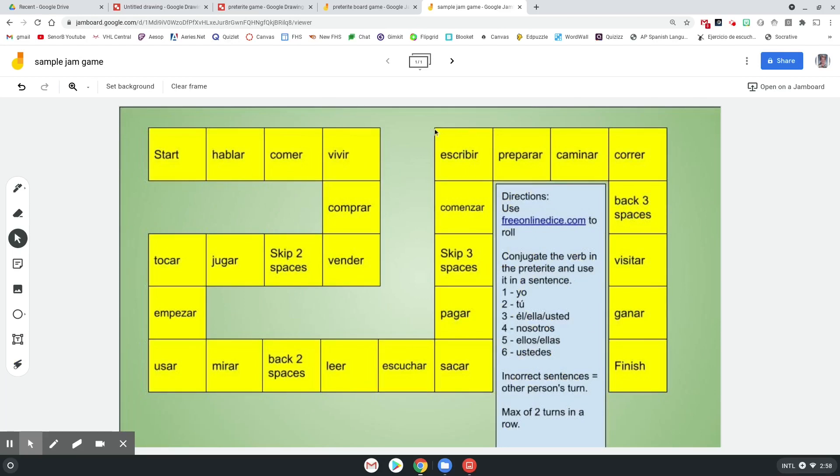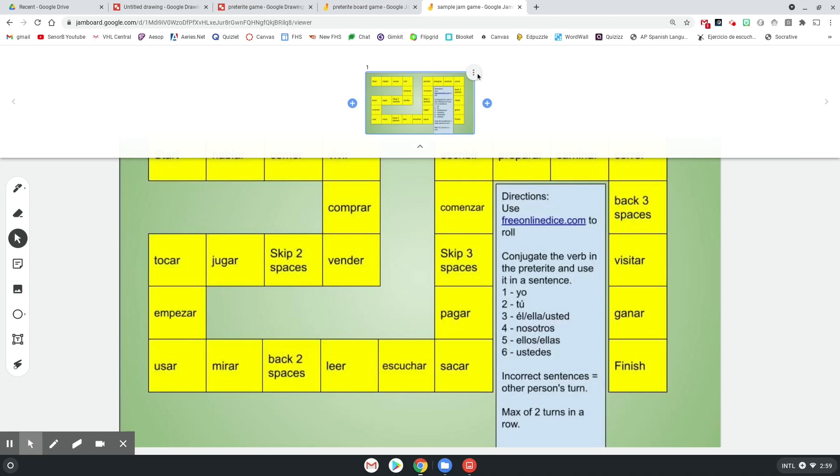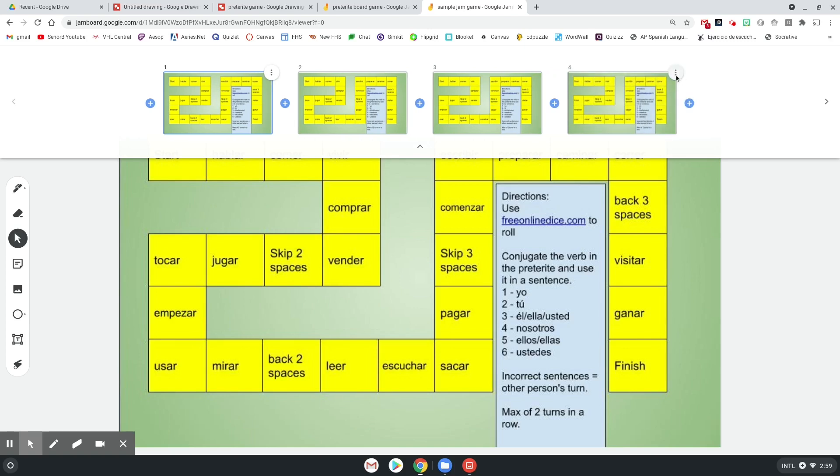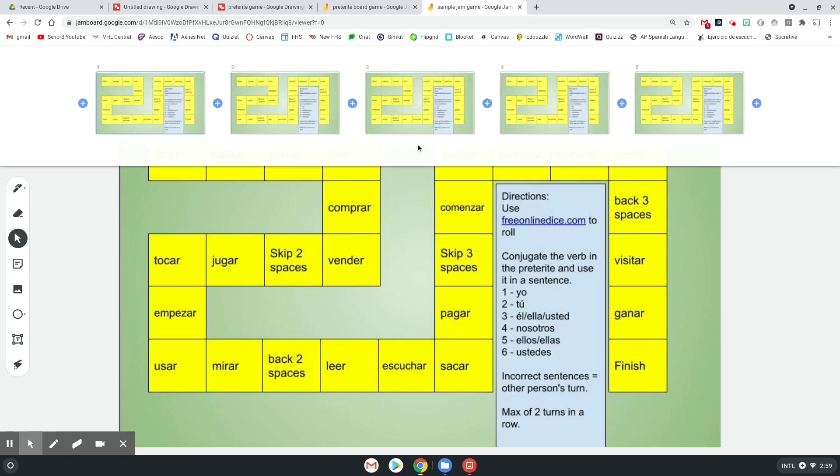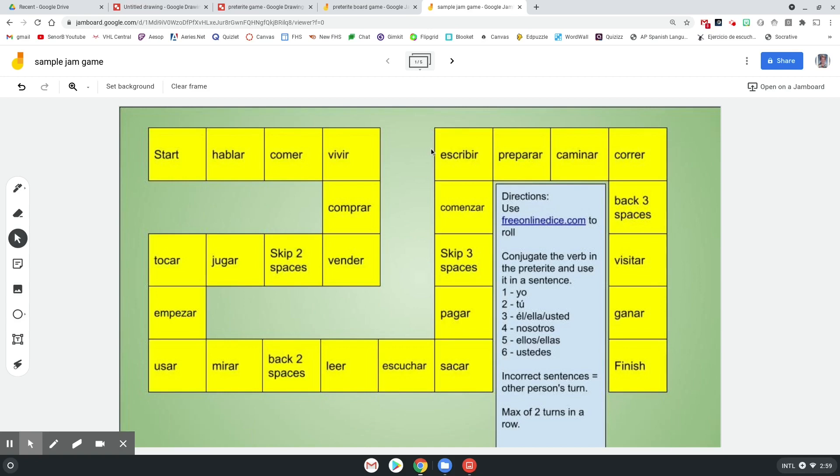Okay, and then what we're going to do here is this is what you're going to end up giving to the students. So once I've got this ready to go, I'm going to click the little expand frame bar up here at the top. And I want to make a bunch of copies of this. The reason being is, let's say I have a class of up to 40 students. I can make 20 copies here, and I can have two students play per slide.